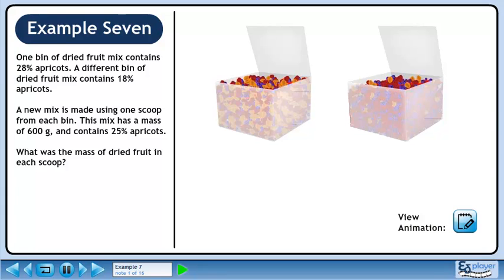One bin of dried fruit mix contains 28% apricots. A different bin of dried fruit mix contains 18% apricots. A new mix is made using one scoop from each bin. This mix has a mass of 600 grams and contains 25% apricots. What was the mass of dried fruit in each scoop?